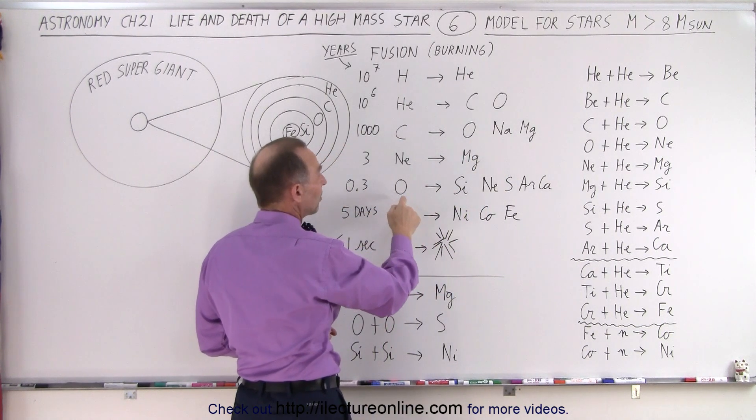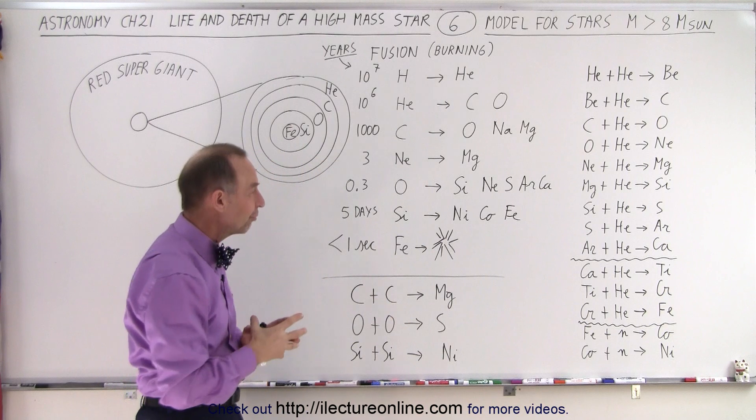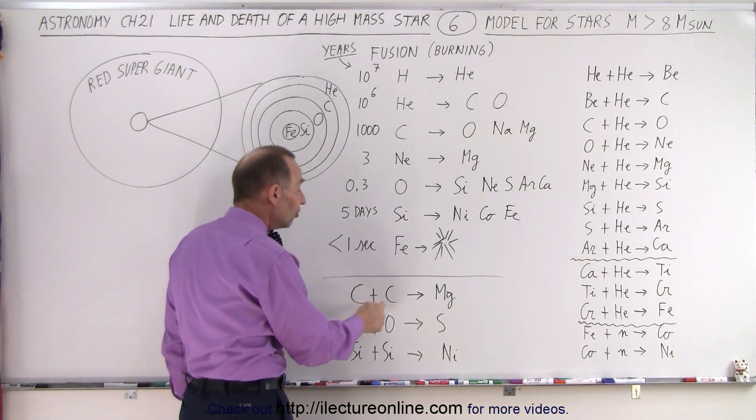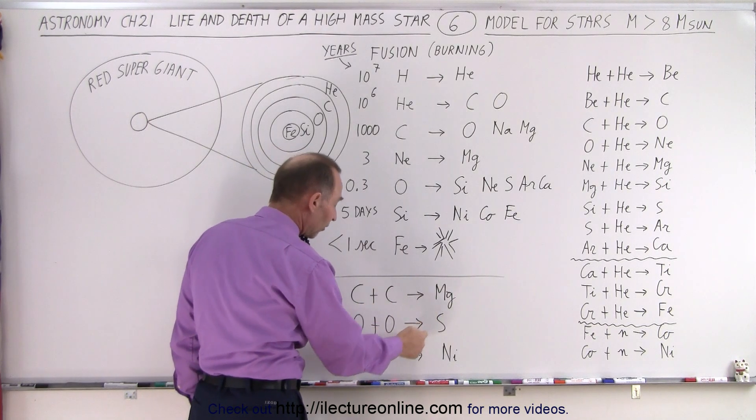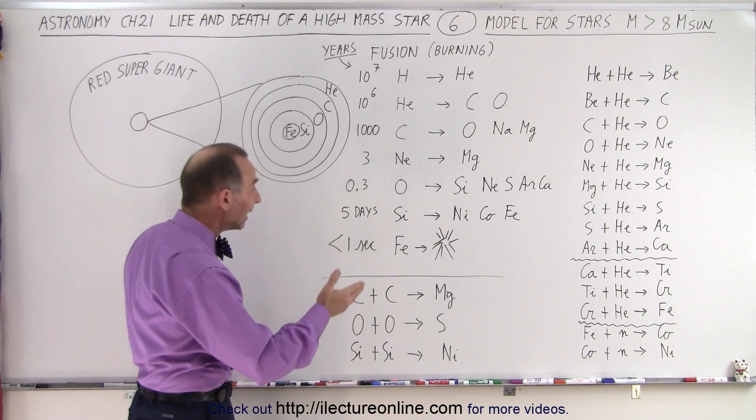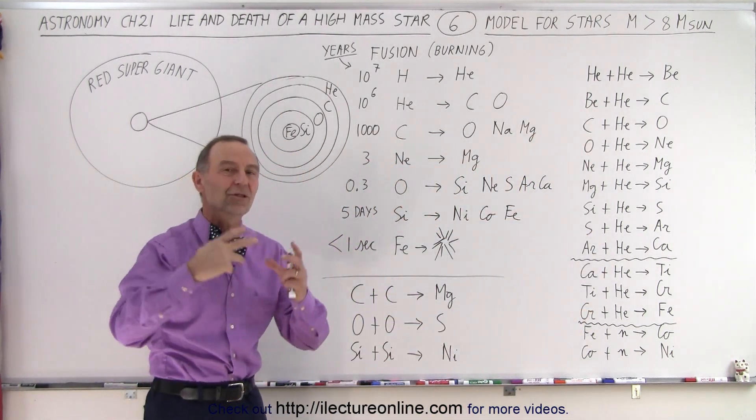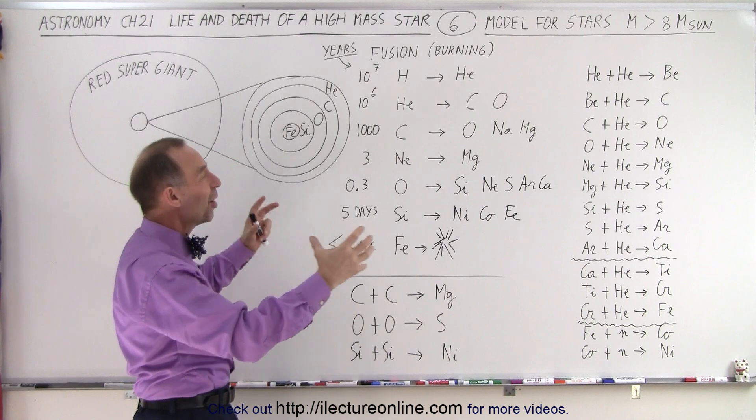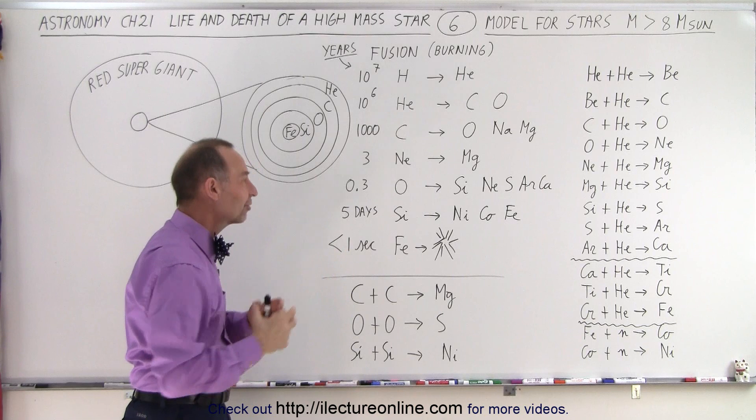Neon will convert to magnesium. Oxygen into silicon, neon, sulfur, argon, and calcium, and so forth, to all these various nuclear fusion processes. Some of the ones that we can think of are probably a carbon fusing with a carbon to form magnesium, an oxygen fusing with an oxygen to form sulfur, and a silicon plus a silicon fusing into nickel. So you can see that it doesn't necessarily have to be the stepwise process. It's probably going to be a combination of processes as the heavier elements are being fused, then those will then fuse into the next element, and so forth, in various combinations.